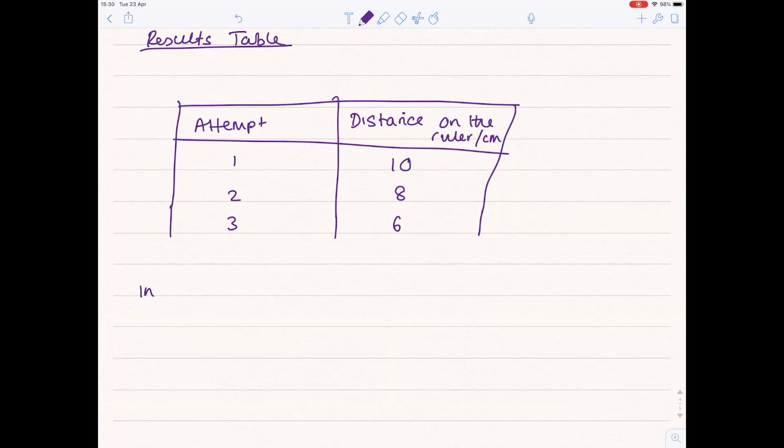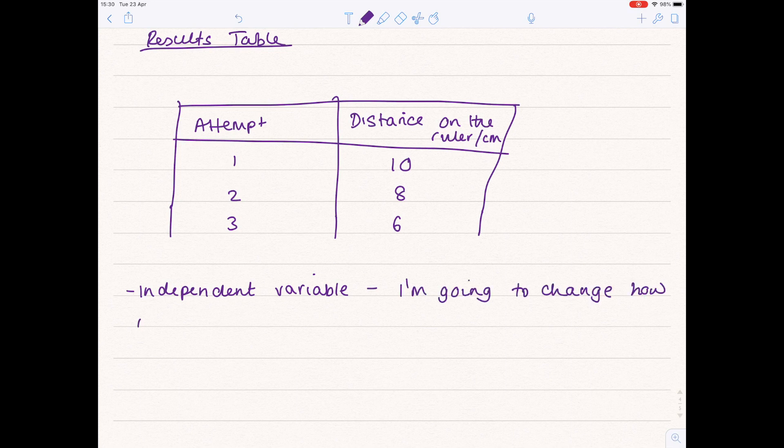Let's look at the variables. They're quite strange the variables this time because it's not a very normal experiment but the independent variable as usual is the thing you change. So I'm going to change how much practice I've had catching the ruler.